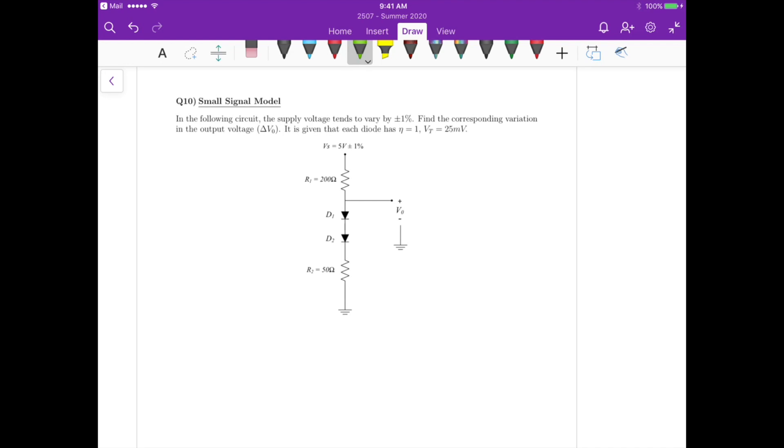So if we assume ideal diodes, then we can perform the DC analysis of the circuit and then calculate the small signal resistance for those diodes. So let's start with that.